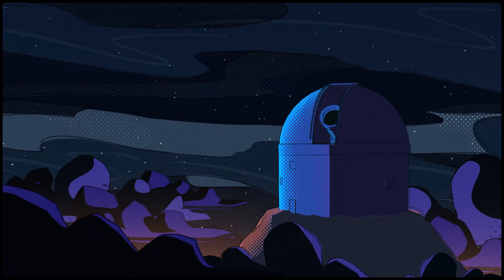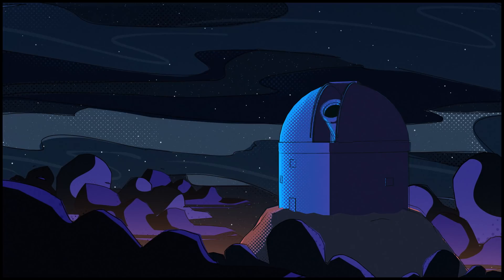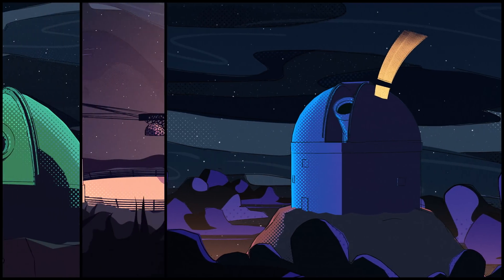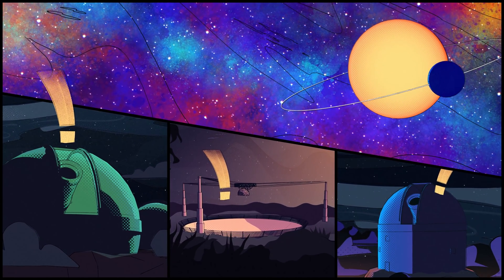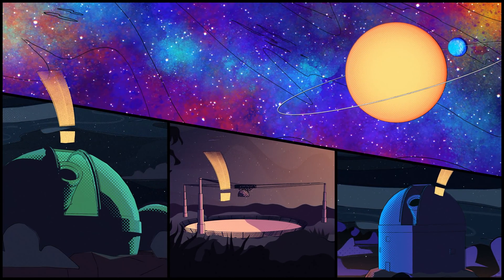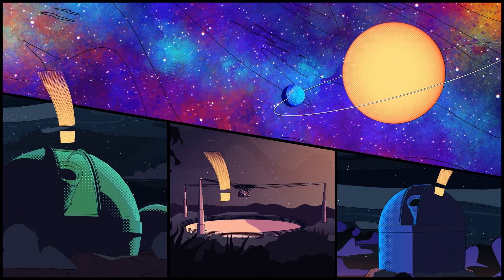The first exoplanet discoveries were very down to Earth. They were made from the ground. Pioneering new techniques, ground-based telescopes began capturing evidence of giant, scorchingly hot planets around other stars.